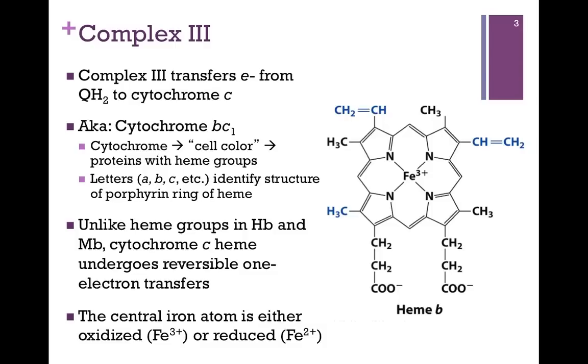Let's first look at Complex 3, our second multi-subunit protein complex as a part of this electron transport chain. It will take electrons from QH2 and eventually pass them to cytochrome C. This complex is also referred to as cytochrome BC1. Let's look at that name a little bit closer.